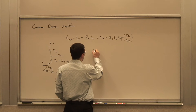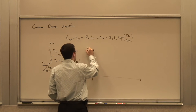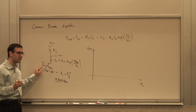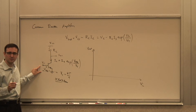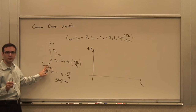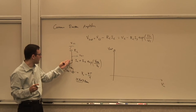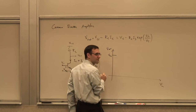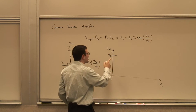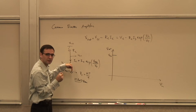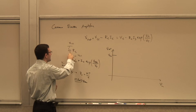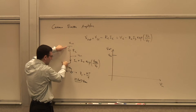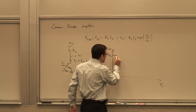Plotting Vout versus Vin: at zero Vin the base-emitter junction is not forward-biased, current is zero, so Vout equals VCC. As I increase Vin, I start drawing more current, so the voltage drop across RC increases and Vout starts coming down — exponentially according to that equation.